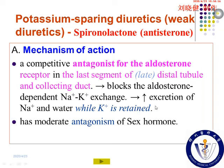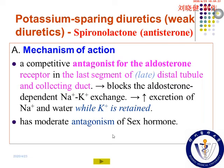Finally, spironolactone increases the excretion of sodium ions while potassium ions are retained. That's why they are called potassium-sparing diuretics. At the same time, because of a similar structure to the sex hormone, spironolactone has moderate antagonism of sex hormones. They also compete to bind with sex hormone receptors like the progesterone receptor and androgen receptor.